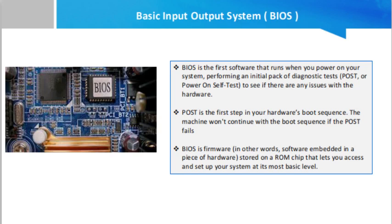To recap: BIOS is a firmware — in other words, software embedded in a piece of hardware — stored on a ROM chip that lets you access and set up your system at its most basic level. A BIOS contains the instructions your computer needs to load its basic hardware, including the POST mentioned already.